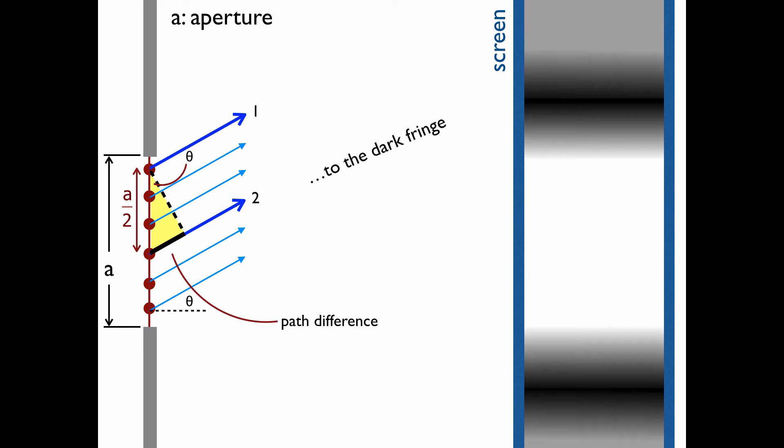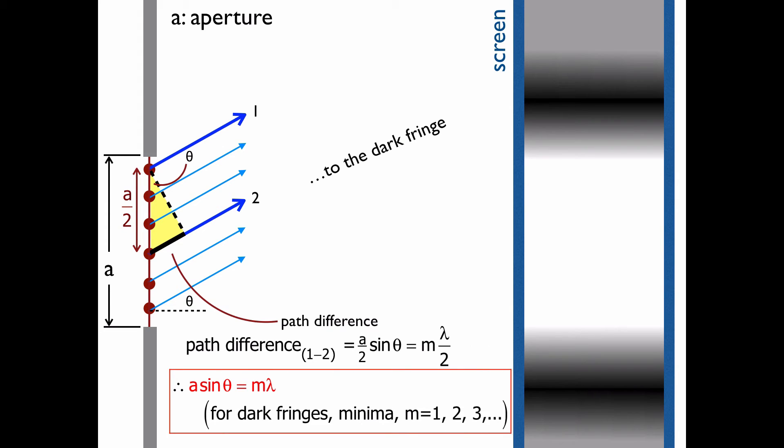So for this path difference, since it leads to the destructive part, it's going to be half a wavelength off. So the hypotenuse, a over two, the aperture over two times sine theta is equal to m lambda over two. Well the twos go away. So this becomes a sine theta is equal to m lambda for dark fringes or the minima or destructive interference. And that uses our order numbers of one, two, three. There's no zero in this one.